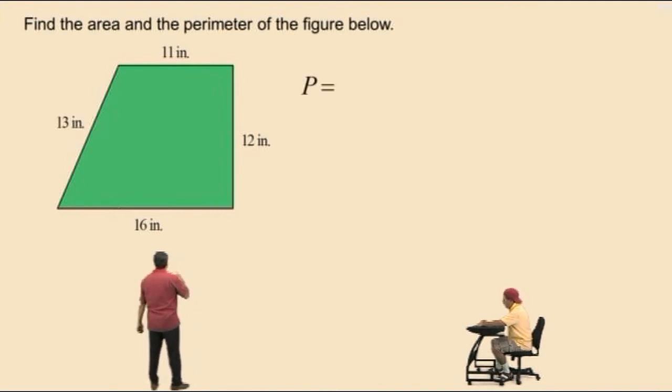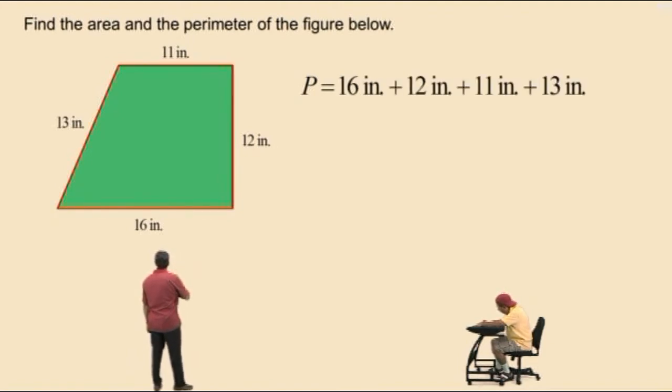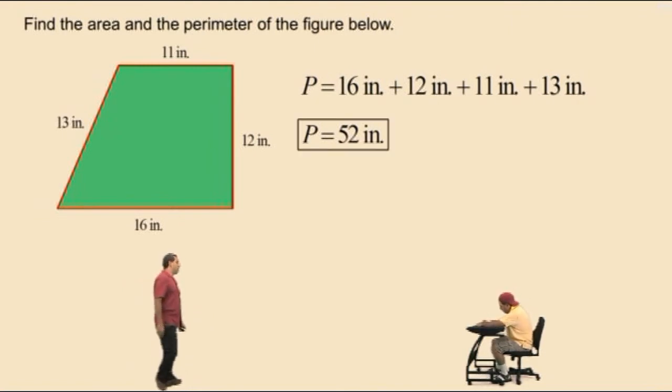Now, let's add up our side lengths in any order. We'll go this way, 16 inches plus 12 inches plus 11 inches plus 13 inches. And when you add all those up, what did you get, Charlie? 52. 52 inches, very nice. Don't forget to put your units and always circle or box your answer.